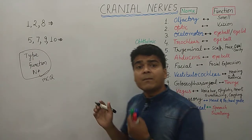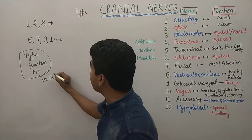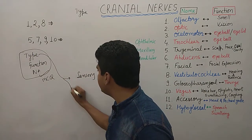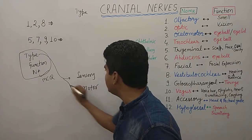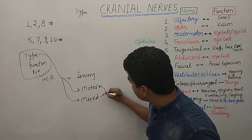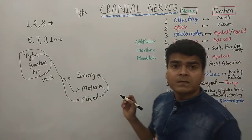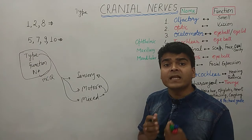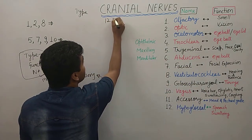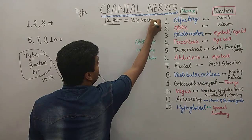The cranial nerves are of three types. The first type is sensory, the second is motor, and the third is mixed — mixed means the nerve which contains both motor and sensory function. In total, we have 12 pairs of cranial nerves, meaning 24 nerves in all.